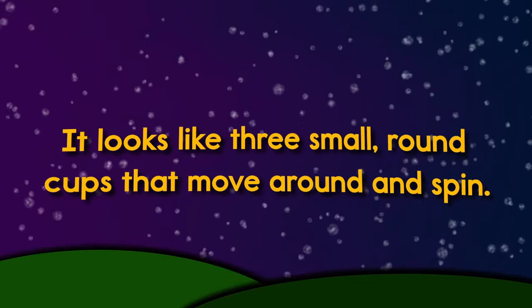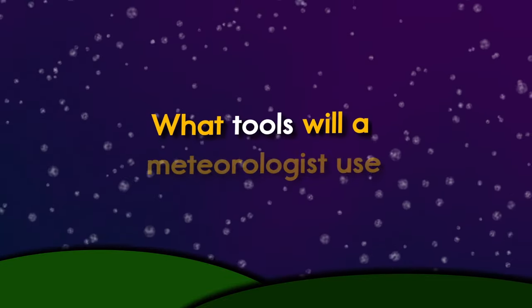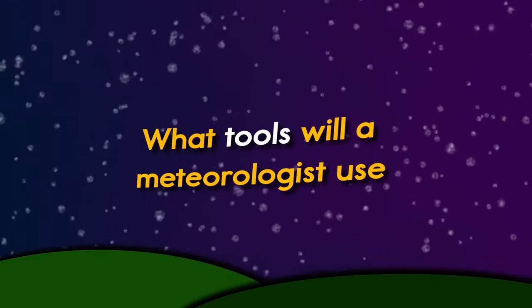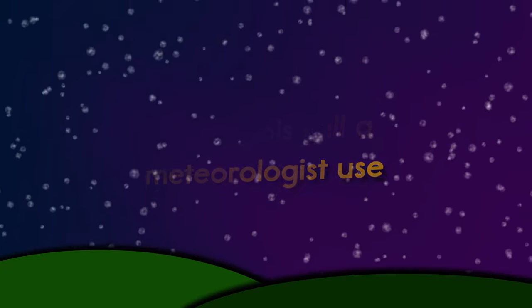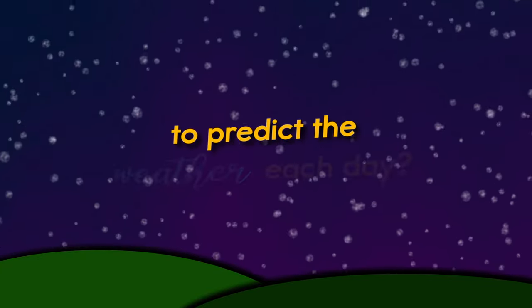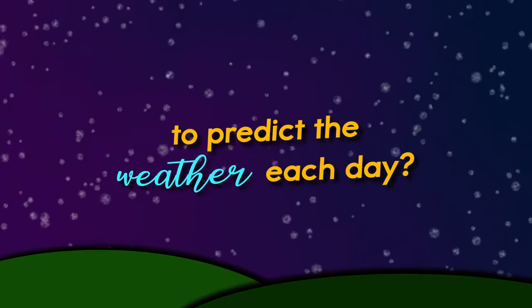An anemometer measures the speed of the wind. It looks like three small round cups that move around and spin.